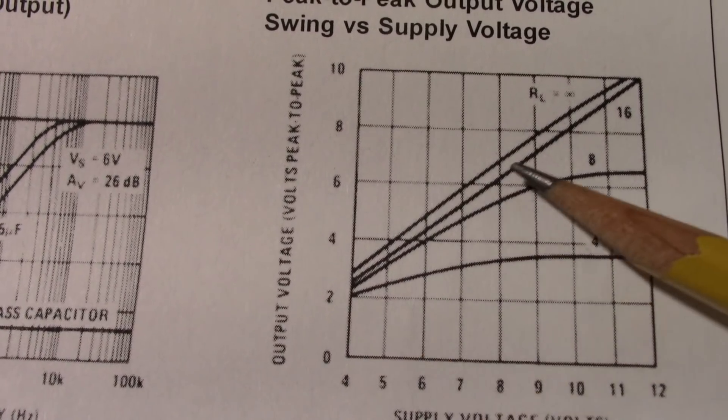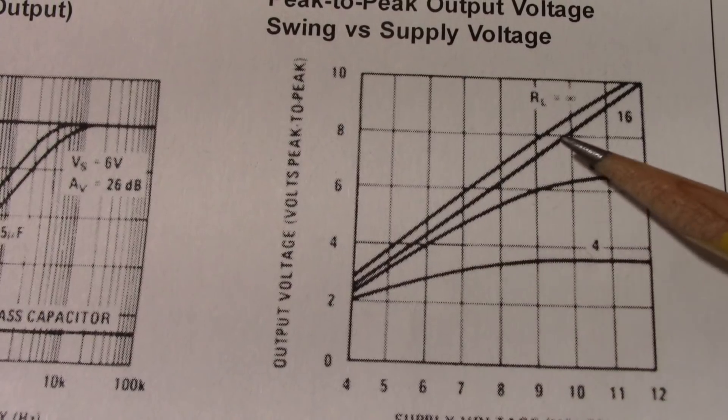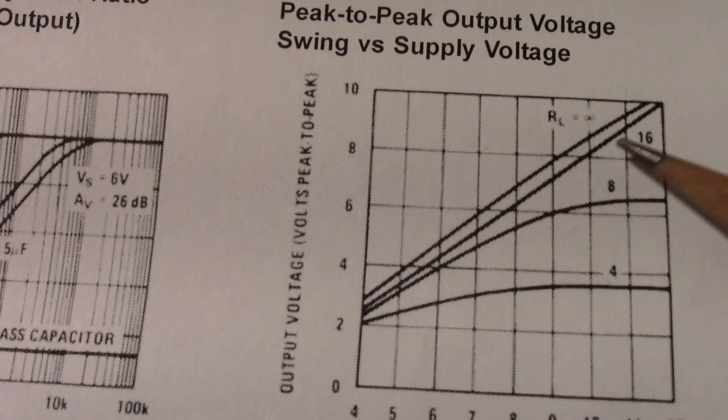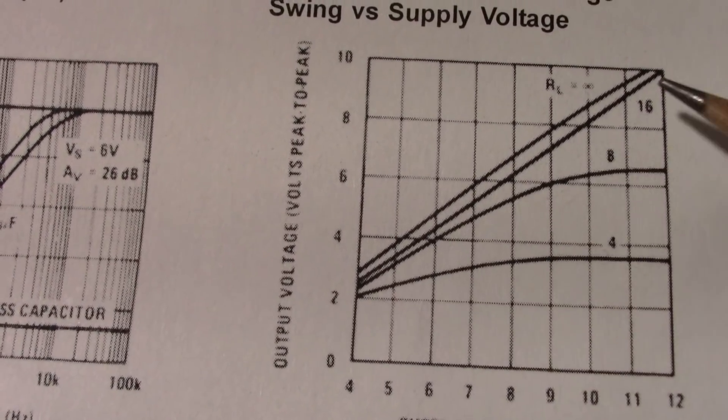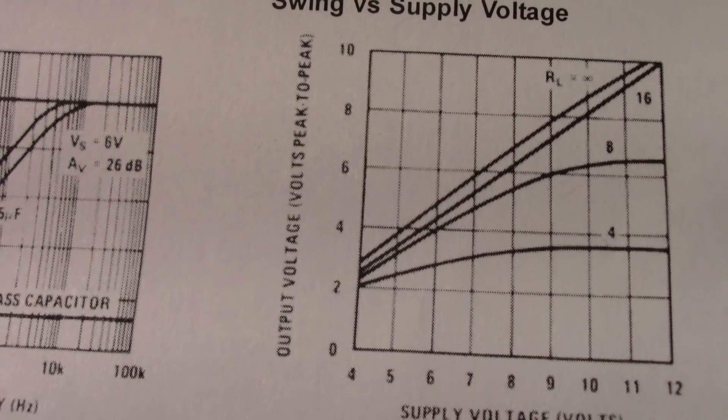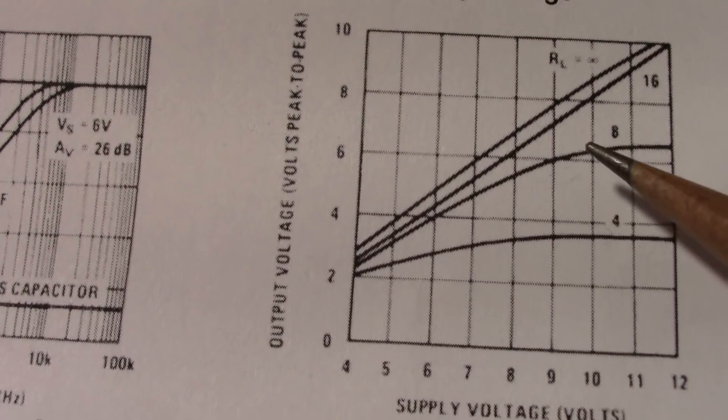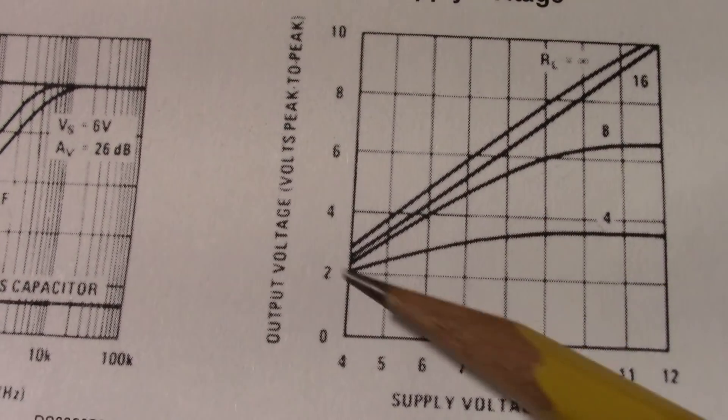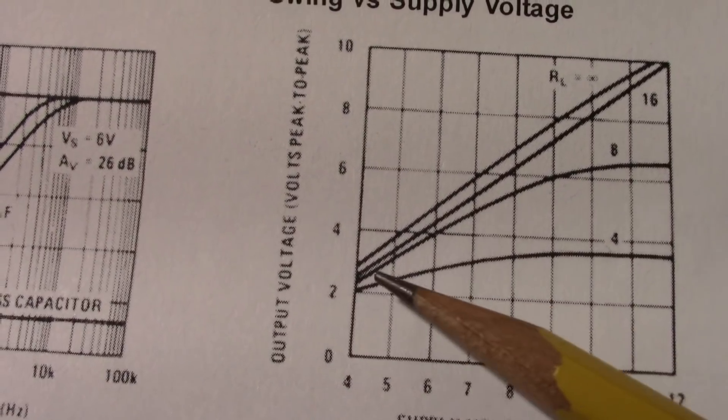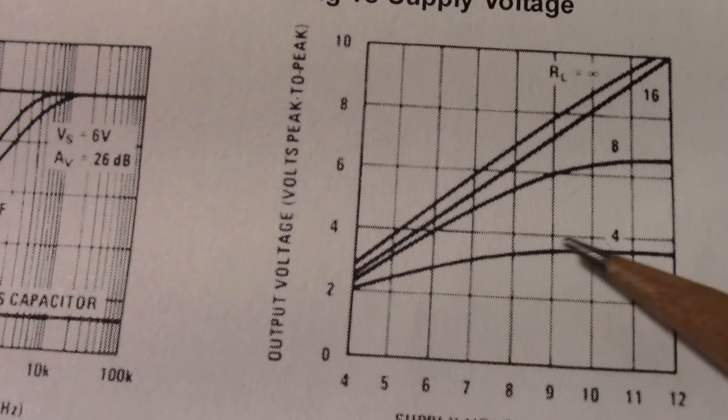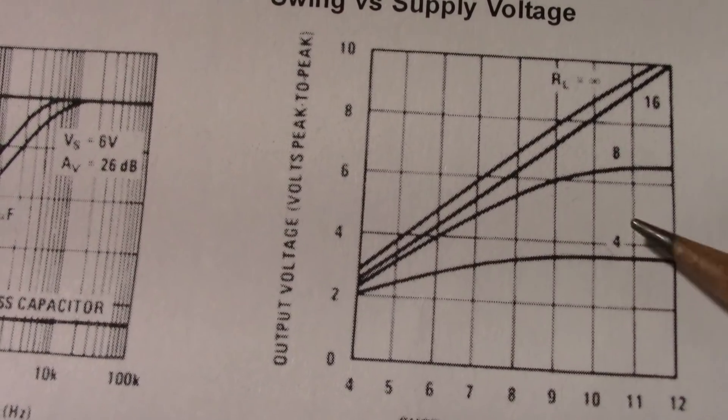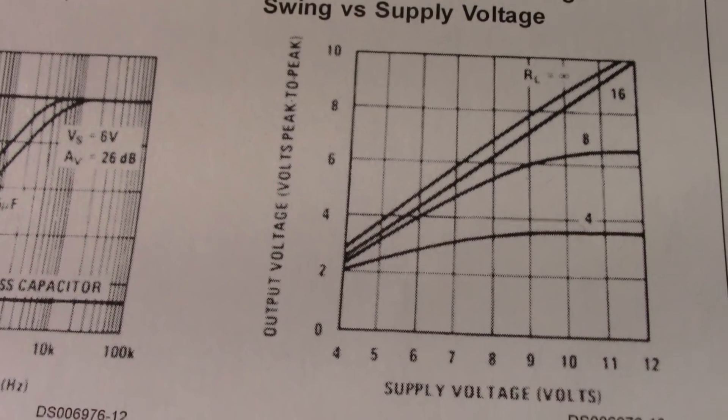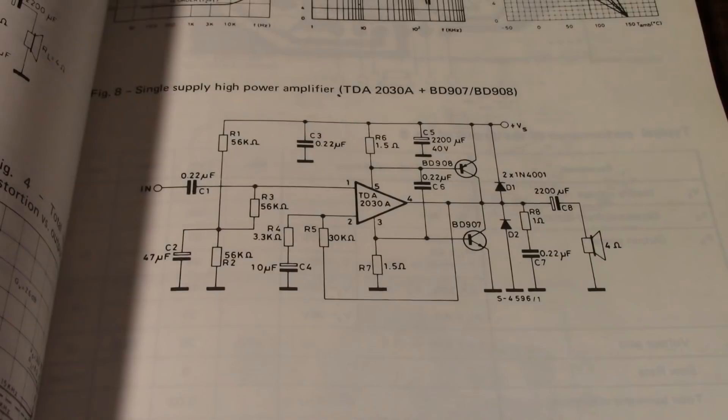Same thing with an 8 ohm load. Up around 9 volts, it starts to flatten out. So you're not going to get much extra output. Now, with a 16 ohm load, look at that. It's a nice straight line going about diagonal, 45 degrees diagonal up. So the chip seems to be suited more for a 16 ohm load. So if we add the booster transistors, we should be able to get more power and the ability to drive 4 ohm loads and get increased output power as we increase the supply voltage. That's one reason why I want to try using that chip.